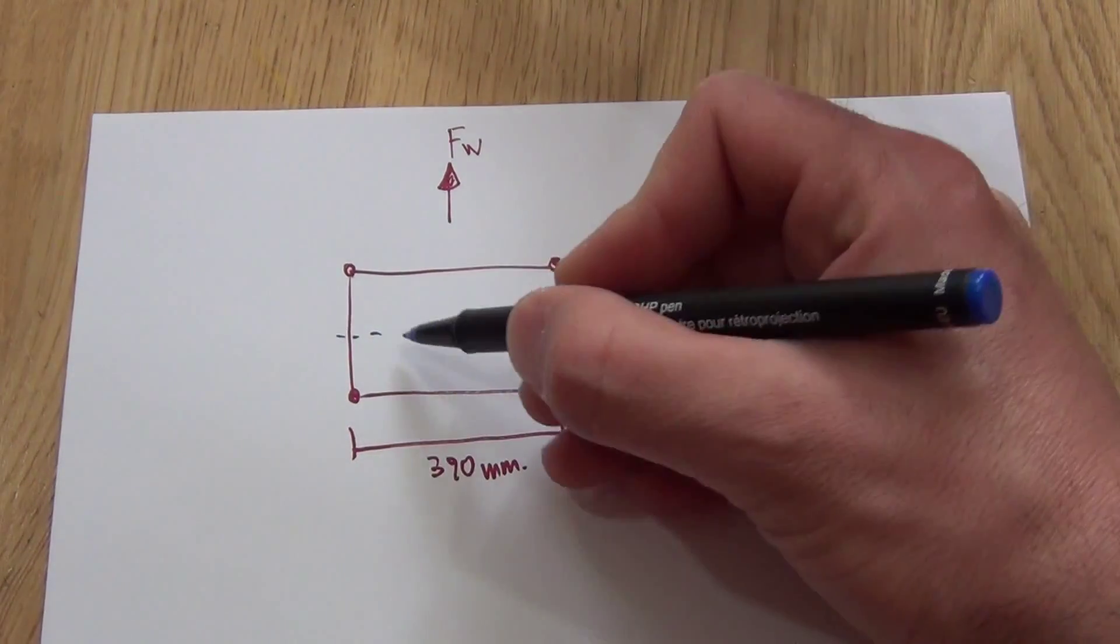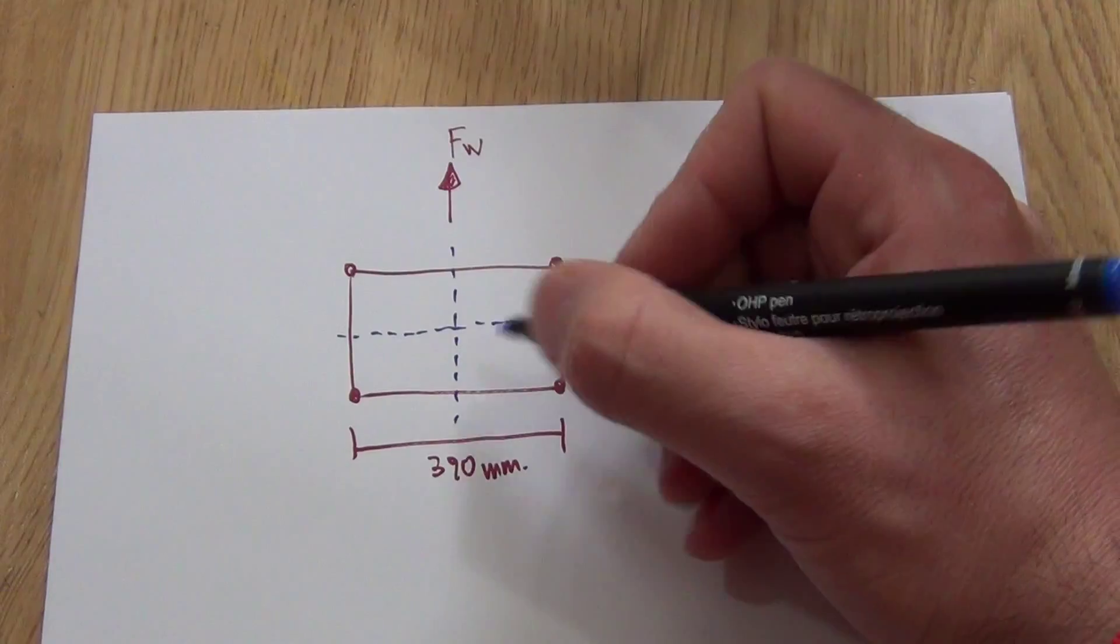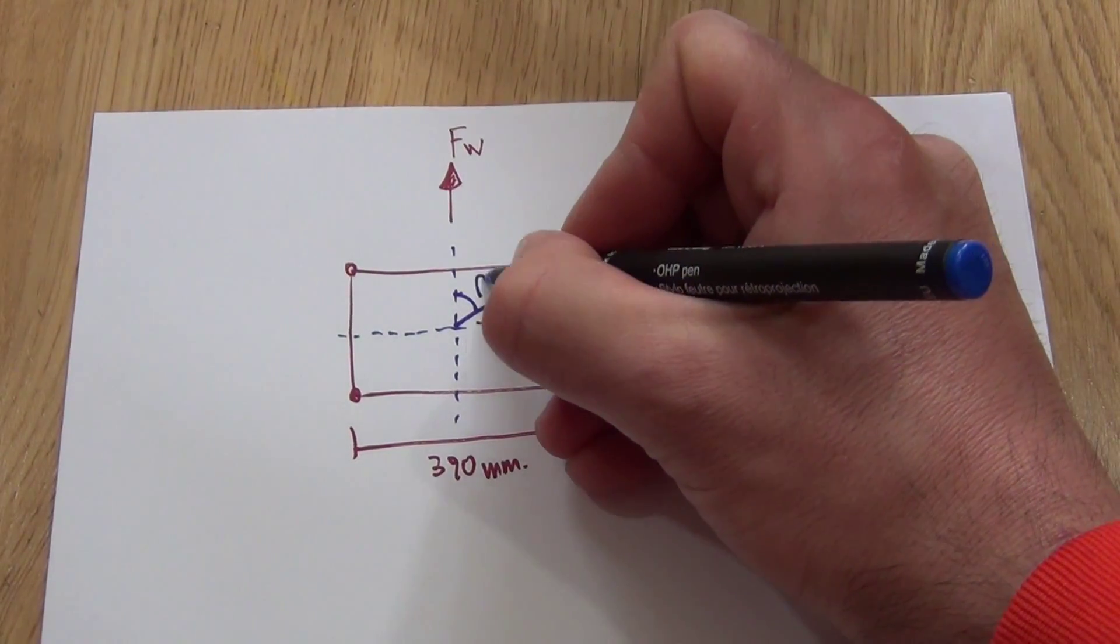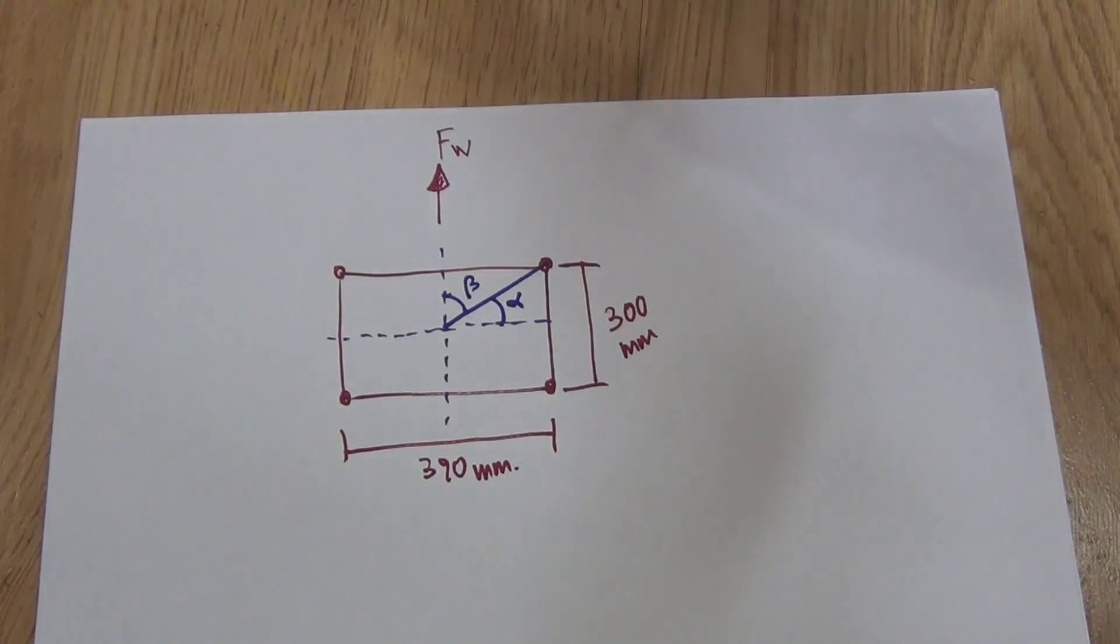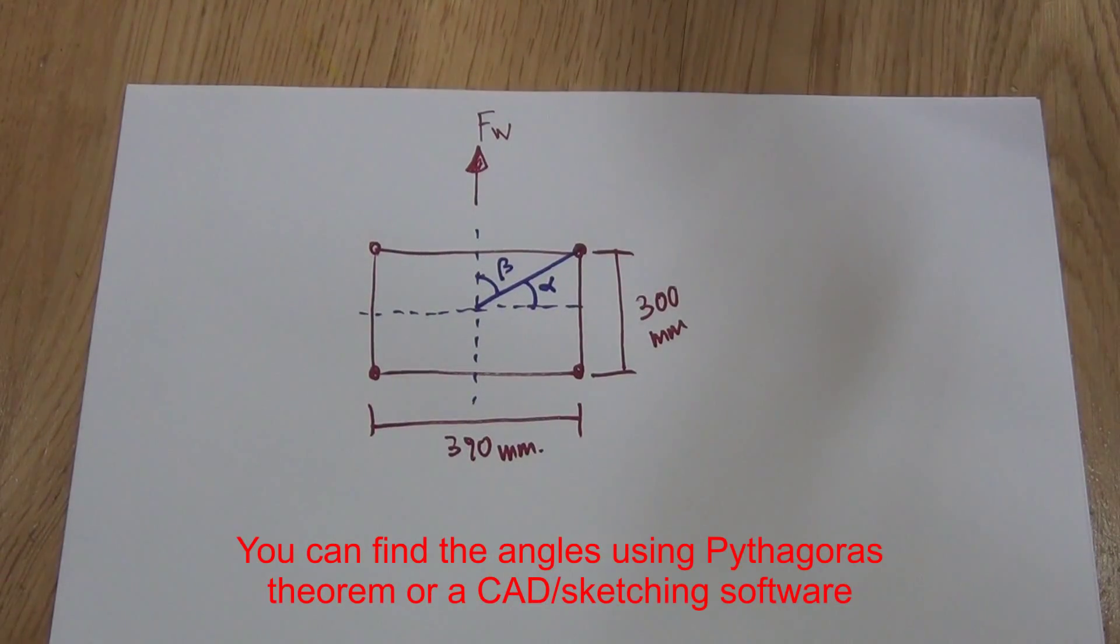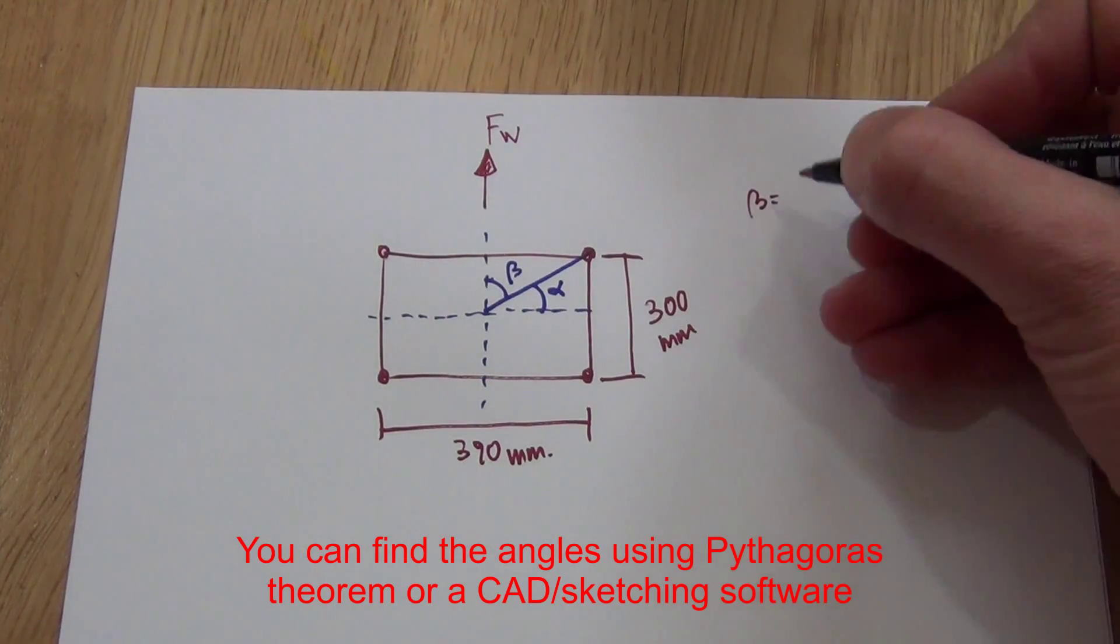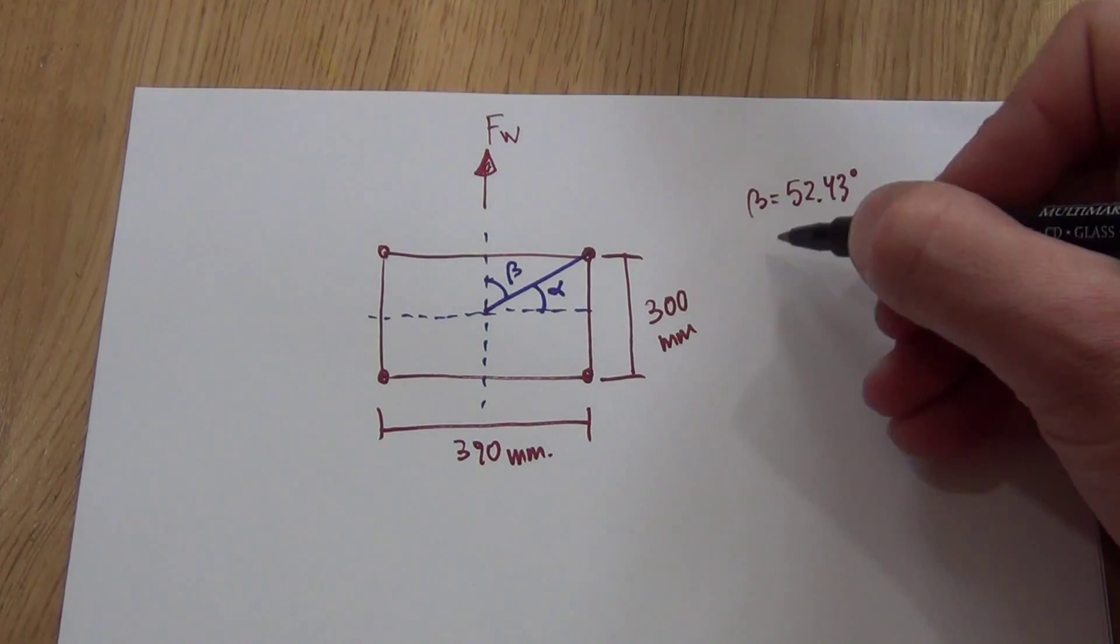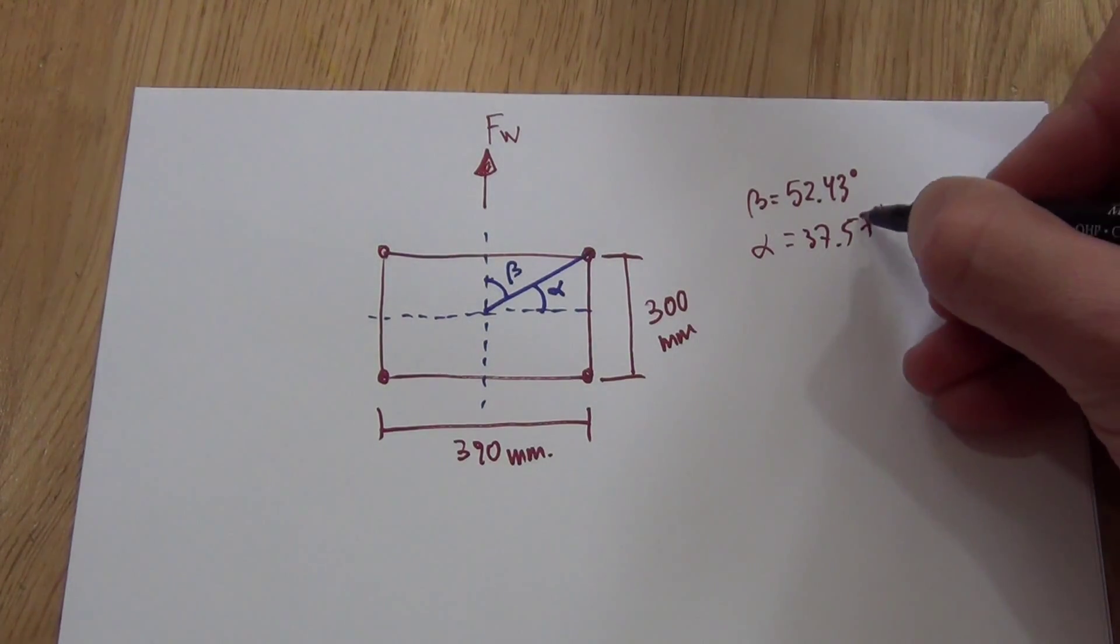So what you want to know is just two angles, which are this one, which we call beta, and this one, which is called alpha. Once you find out these angles, which in my case are beta was 52.43, you can round it, you don't need to put two decimals, and alpha 37.57.